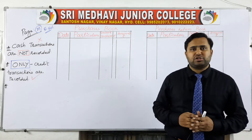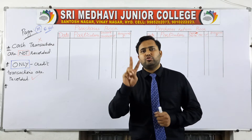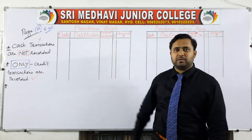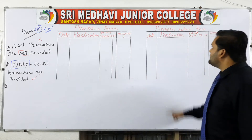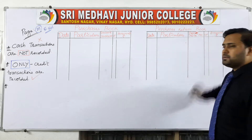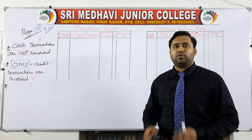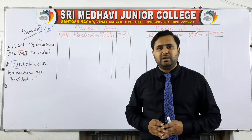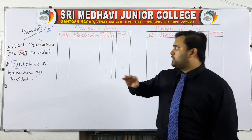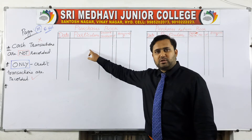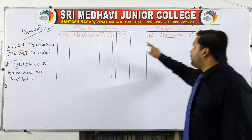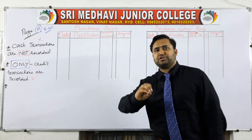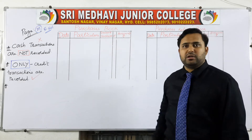In this question, you have to prepare two books. Number one is the purchase book, and number two is the purchase returns book. The following transactions given in the question have to be entered or recorded in either the purchase book or the purchase returns book. The concerned transaction goes to the concerned book.